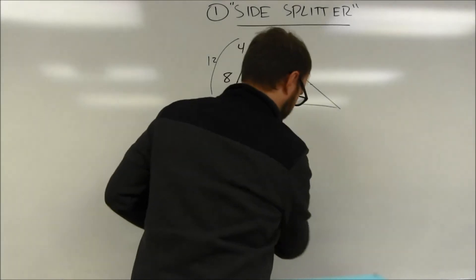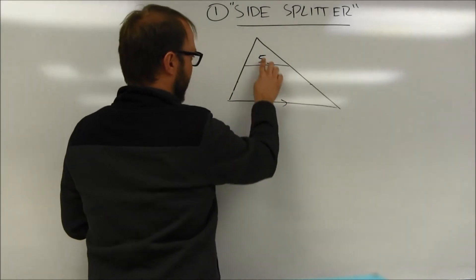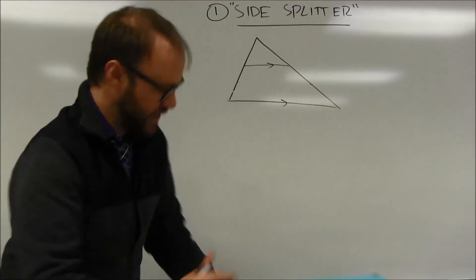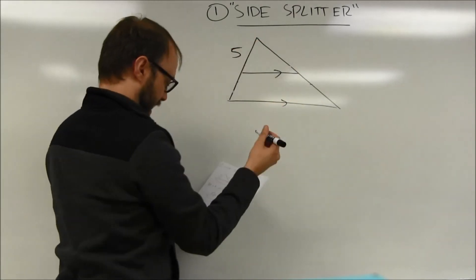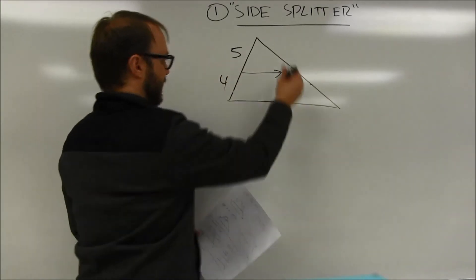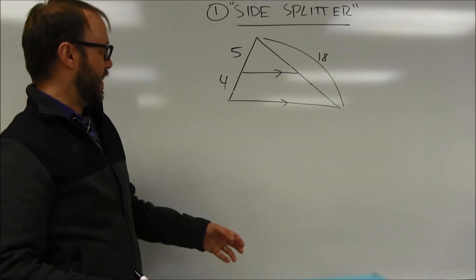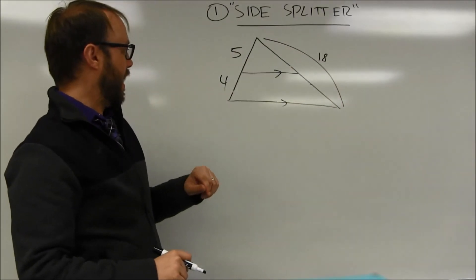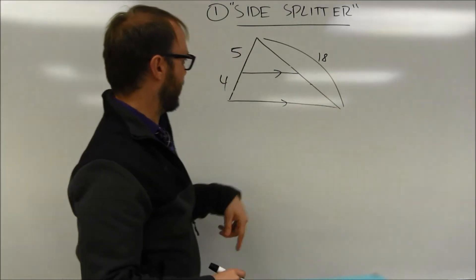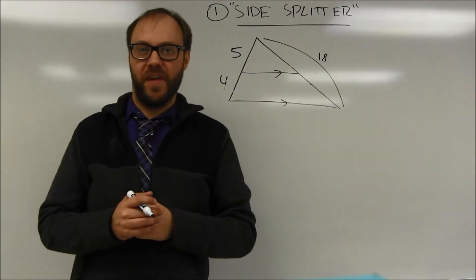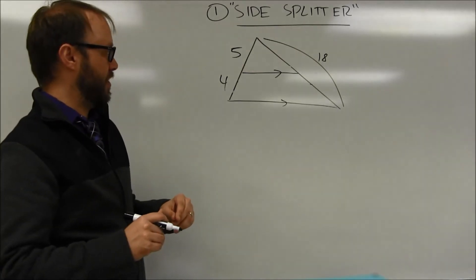Let's look at one more example. Sometimes you may have to do a little relabeling. Let's say the upper length is 5, the lower length is 4, and I'm given the full side of this triangle on the other side. I have an upper side and a lower piece, but I don't have a lower piece that matches up on the other side, or an upper piece that matches there. This could be side-splitter, but currently I don't have the information in the right form to use it directly.